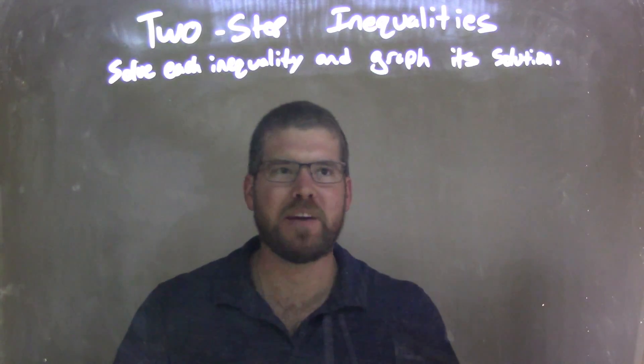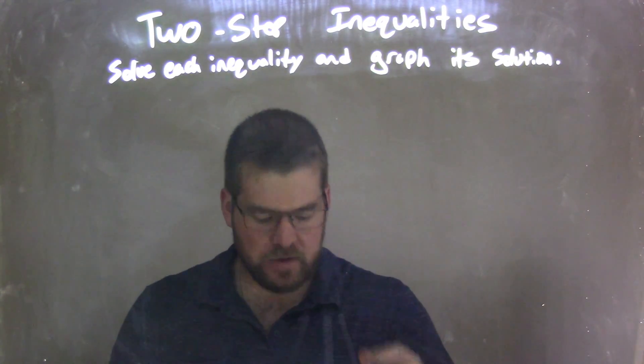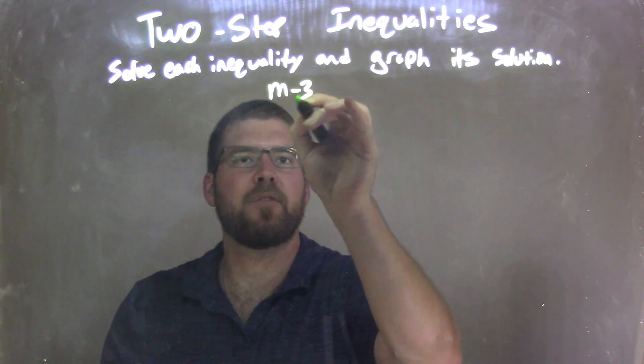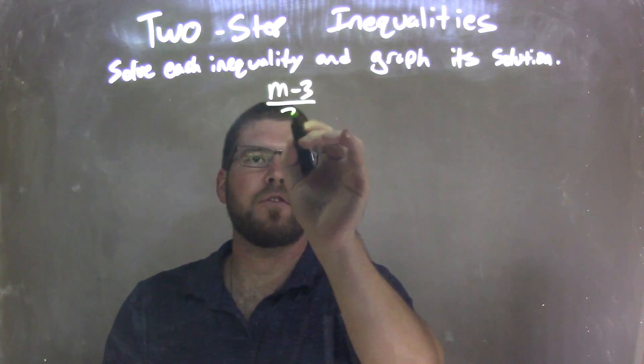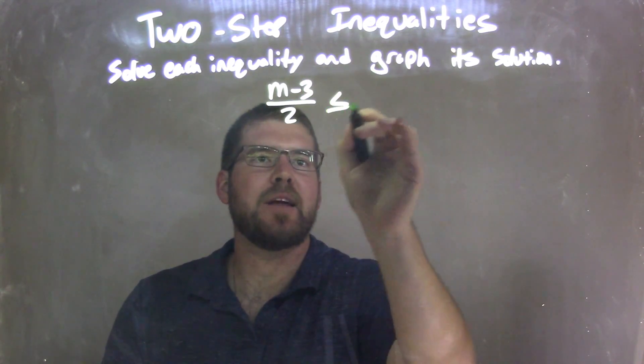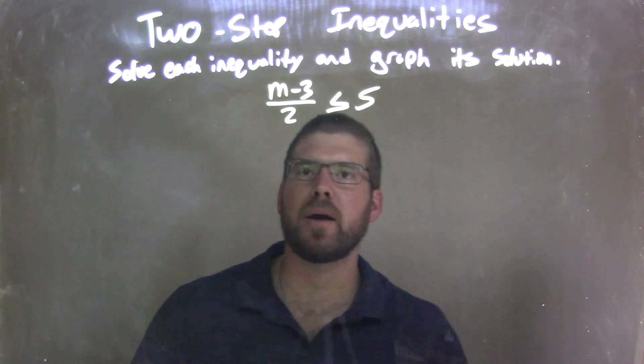We're going to solve each inequality and graph its solution. So if I was given this inequality, m minus 3 over 2 is less than or equal to 5.